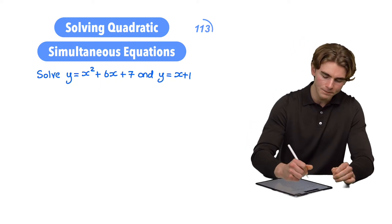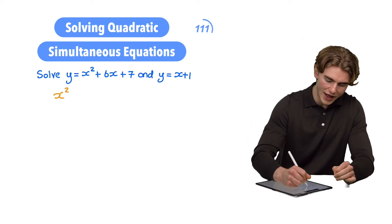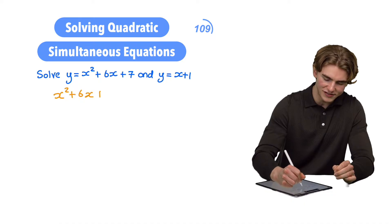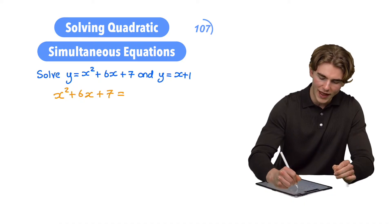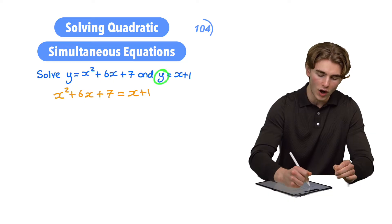So what we can actually say is that x² + 6x + 7 is equal to x + 1. Why? Because they're both equal to y.